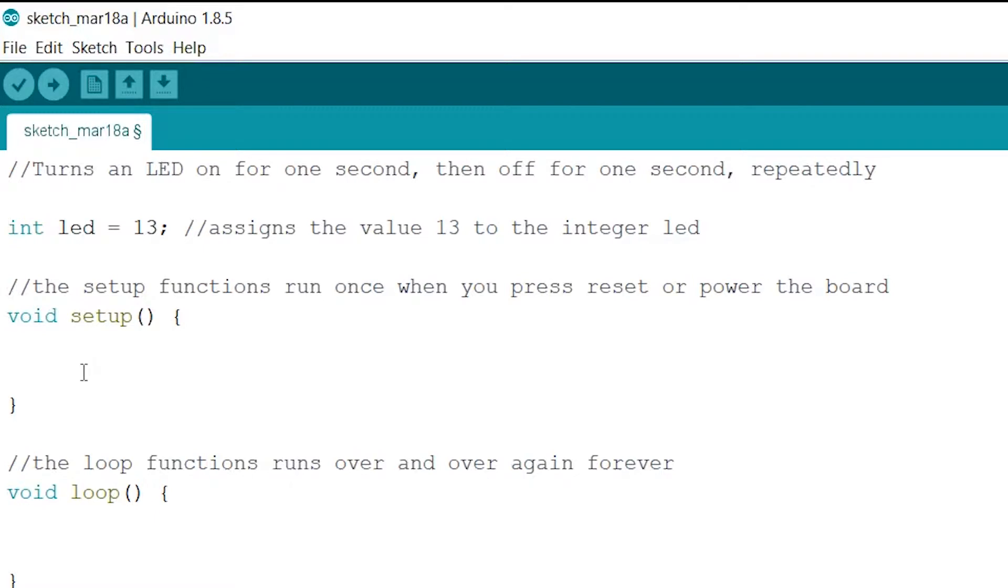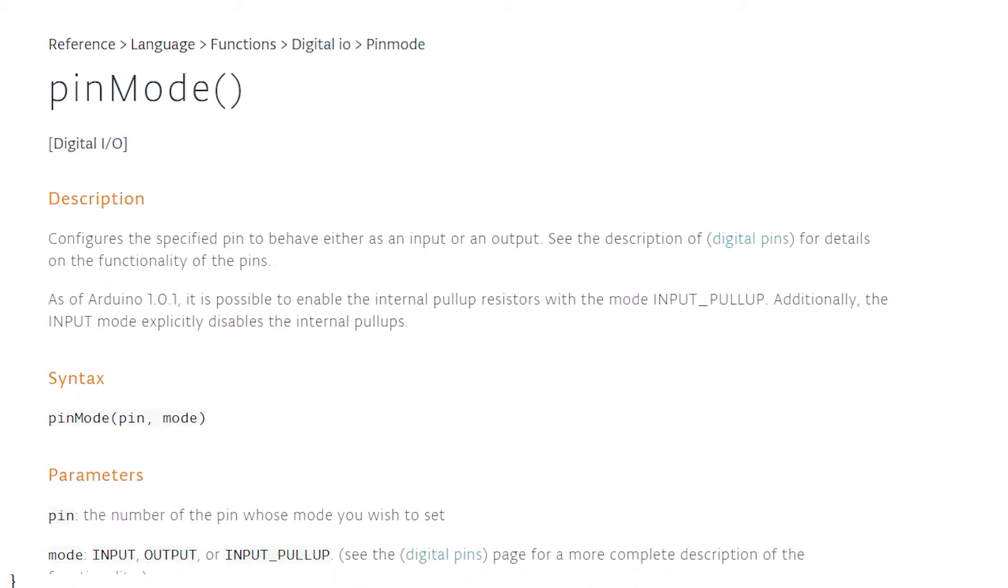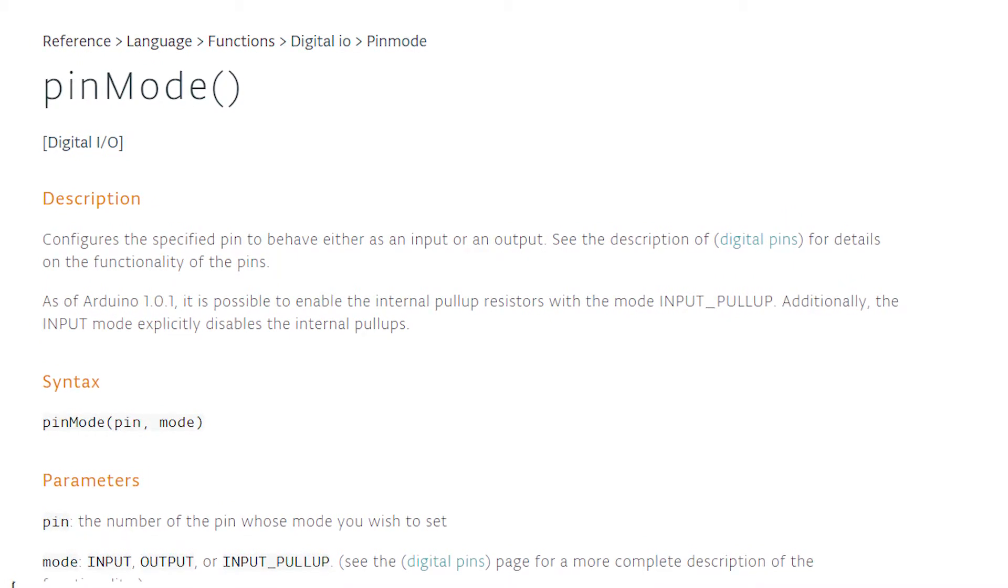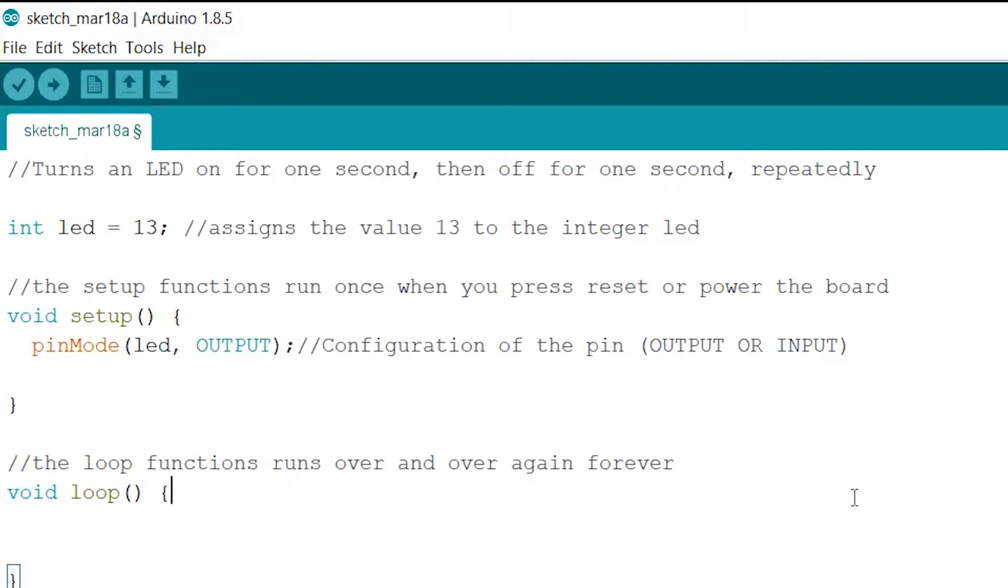Now we will write in our setup function pinMode LED output and semicolon. So pinMode allows you to configure the specified pin to behave either as an input or as an output. Input meaning incoming data from like a sensor or the press of a button. But in our case, we have to turn on a LED. So this has to be output. Because we are sending something out. So we write configuration of the pin output or input. Take note that you can also write 13 instead of led. And just delete the integer led. But I advise you to not do this and always create a global variable. But you can run this and it will still work. But for now we won't do this.